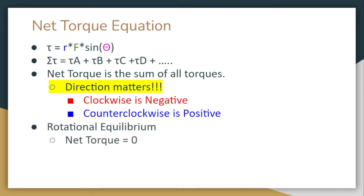Clockwise is considered the negative direction and counterclockwise is considered the positive direction. For rotational equilibrium, that just means that net torque is equal to zero, just like linear equilibrium when net force equaled zero.